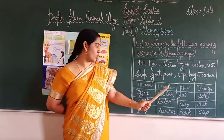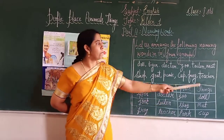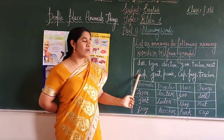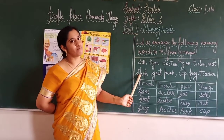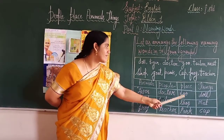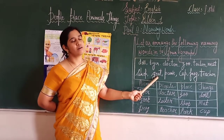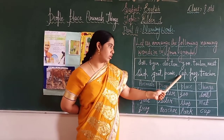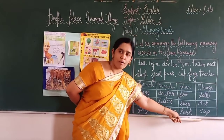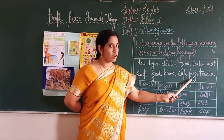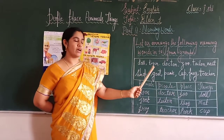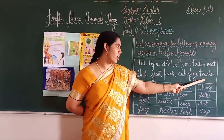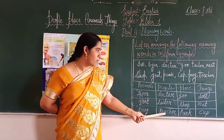Goat — it comes under the group of animals. Man — it comes under the group of people. Shop is the name of a place, so it comes under the group of places. Goat is an animal, so it comes under the group of animals. Kerb is the name of a thing, so it comes under the group of things. Frog is the name of an animal, so it comes under the group of animals. And the last one — teacher. Teacher also comes under the group of people.